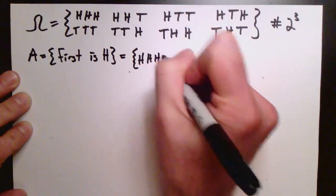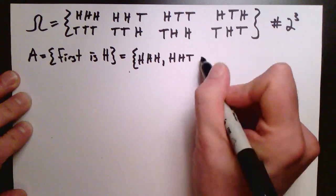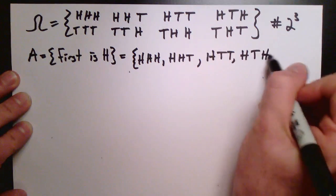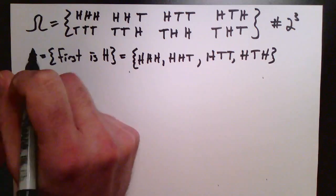Now let's consider two events. The event A, which is the first coin flipped as a head, so that would be head, head, head, head, head, tail, head, tail, tail, and head, tail, head.